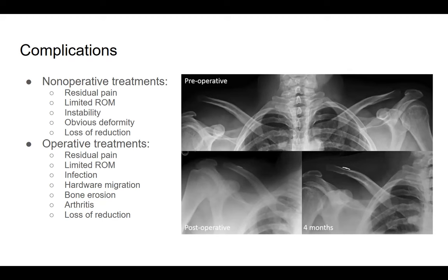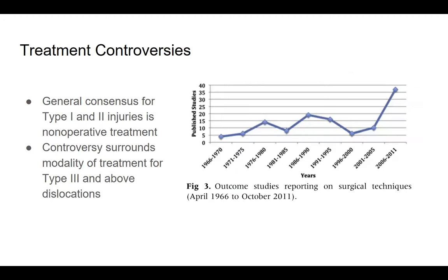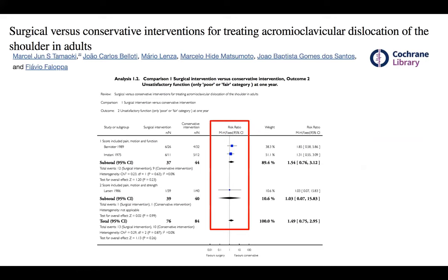A pre-operative right type 5 AC joint dislocation was treated with suture button fixation, with good immediate post-op reduction; however, about four months out there was some loss of reduction. There is significant controversy surrounding treatment of AC joint dislocations. For type 1 and 2 injuries, the consensus is non-operative treatment. For type 3 and above, there is significant controversy not only about operative versus non-operative treatment, but also about which operative technique is best.